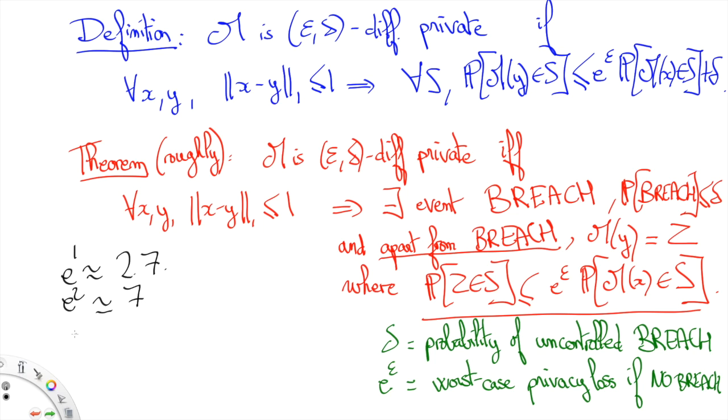This means that values of epsilon that are beyond 2 or 5 are already quite problematic, and values that exceed something like 10 or 14 can be regarded as useless. If you have a 14 differentially private mechanism, basically it's not differentially private, and this is because e to the power 14 is already in the order of the millions.